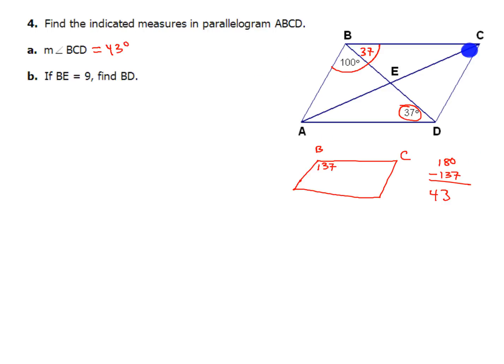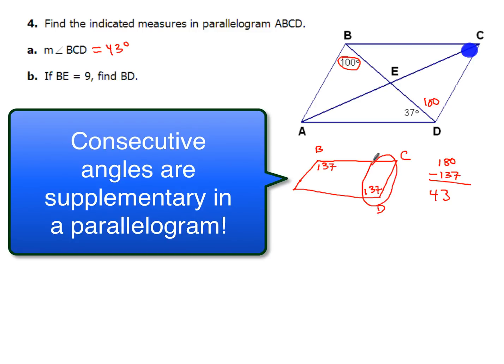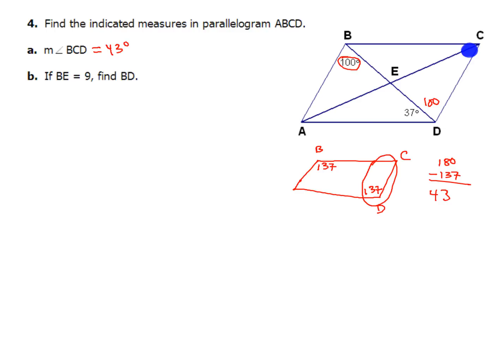Now I could have done that a little bit differently. Instead of going after it from that perspective, I could have done the same idea but said if this angle is 100, I know that this angle right here is 100. And then I'd have 137 in this corner down here, basically where angle D is. So again, I'd use that same property, consecutive angles, so these two angles right here have to add up to 180, and then I would just subtract 137 from 180 to come up with 43 degrees. So either way I do that, I end up with 43 degrees for the measure of angle BCD.